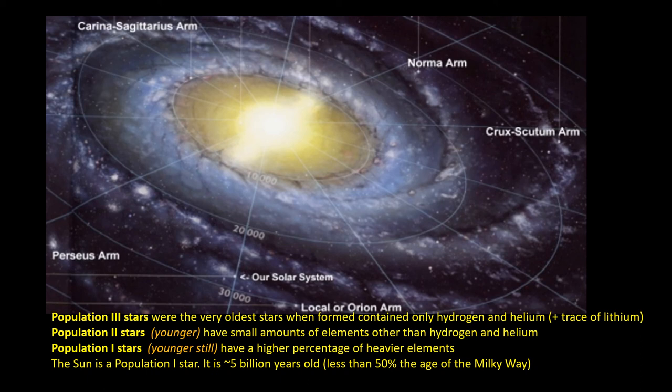The disk of the galaxy and the central bulge contain younger Population I stars like the sun, and these are much richer in heavy elements and likely to have planets. The first Population I stars appeared eight billion years ago.